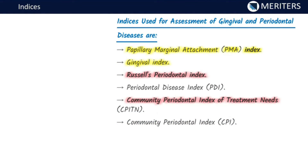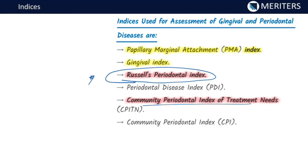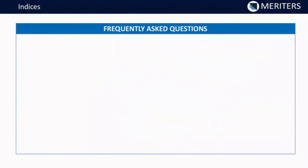Indices used for assessment of gingival and periodontal disease include the PMA Index (Papillary Marginal Attachment Index), the simple Gingival Index, Russell's Periodontal Index — very important — the Periodontal Disease Index, and the CPITN Index, which measures disease status and also gives treatment needs. The Community Periodontal Index is also used.